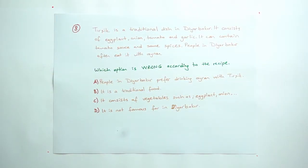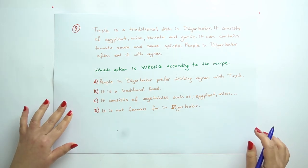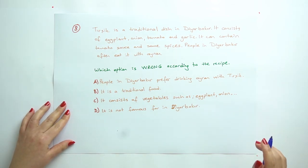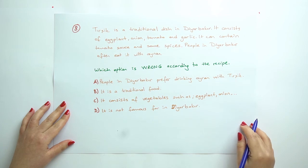Question 8: Which option is wrong according to the recipe? Trishik is a traditional dish in Diyarbakır. It consists of eggplant, onion, tomato, and garlic. It can contain tomato sauce and some spices. People in Diyarbakır often eat it with ayran.